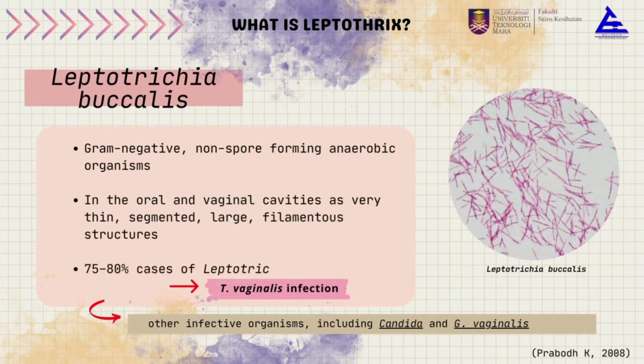About 80% of cases that contain Leptothrix are actually associated with Trichomonas vaginalis infection, but it can also be associated with other organisms such as Candida and Gardnerella vaginalis.